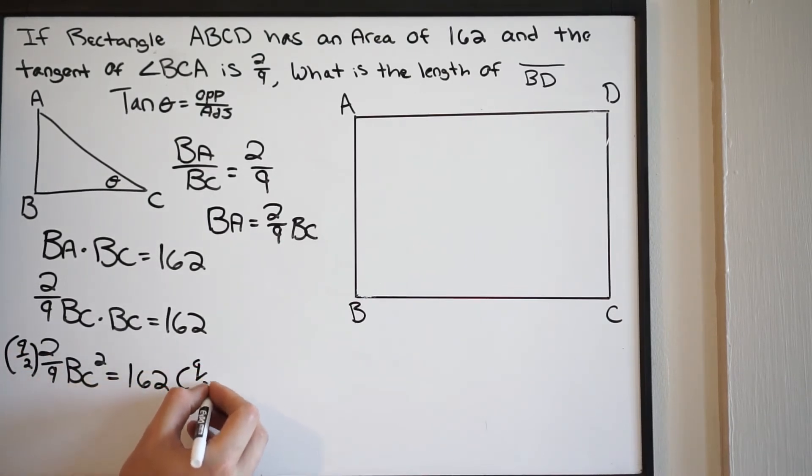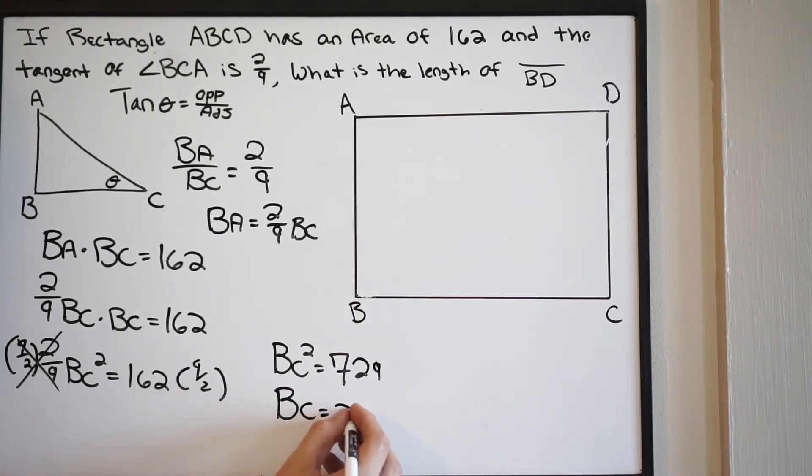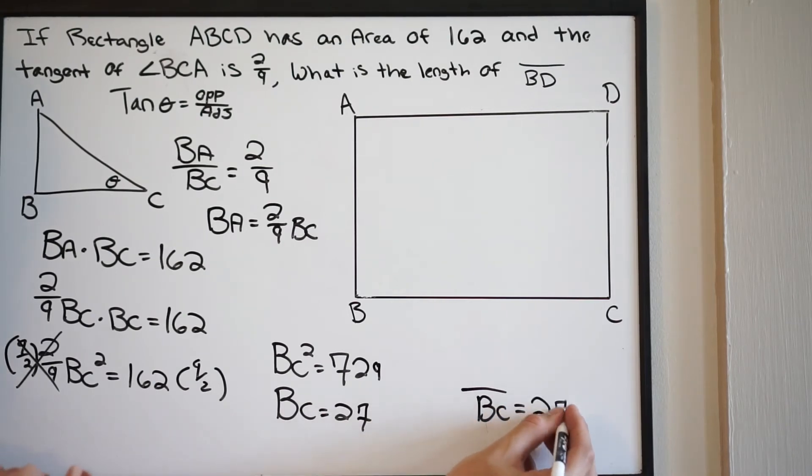Multiplying both sides, this cancels here. So using our calculator, we're going to do 162 times 9 divided by 2. BC squared equals 729. Then we just want to take the square root on both sides. So doing that, we get 27. BC is equal to 27. This tells us that length BC is equal to 27. You can even put it on the rectangle that we have. So here's length BC, this is going to be 27. And if length BC is 27, that means that length AD also has to be 27.